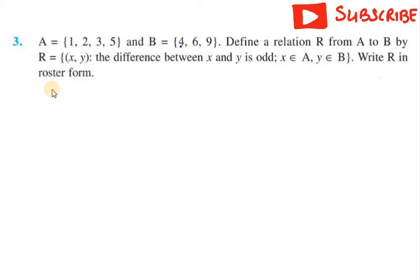Hello everyone, let's start with question number 3. So it says A equals 1, 2, 3, 5 and B equals 4, 6, 9. Define a relation R from A to B by R equals (x, y): the difference between x and y should be odd and x belongs to A, y belongs to B. Write R in roster form.